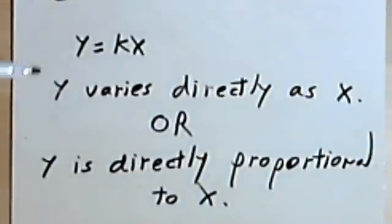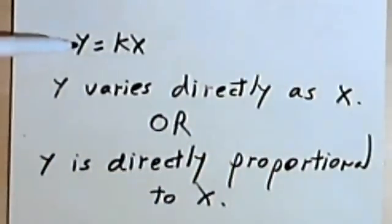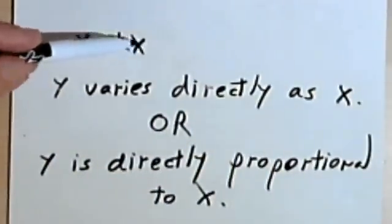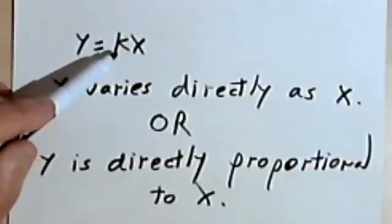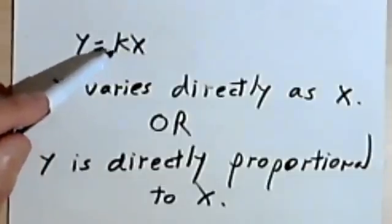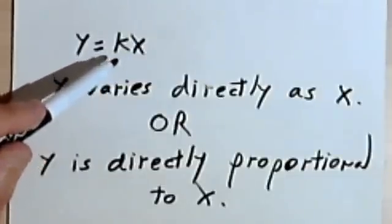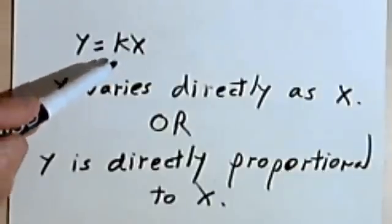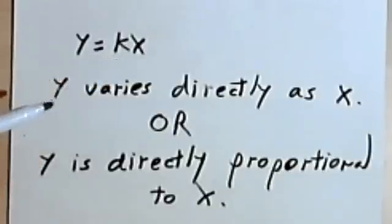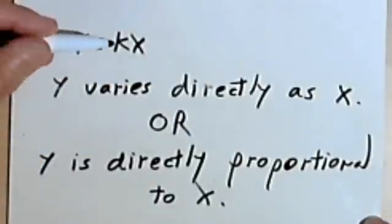So the general formula for direct variation is y equals kx, and k is going to stand for a constant. The reason it's a k instead of a c is the Germans thought this up first, and the word for constant in German begins with a k.